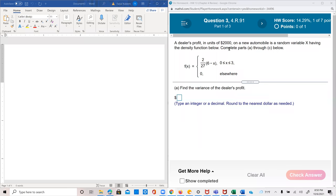A dealer's profit in units of $2000 on a new automobile is a random variable x having the density function given below. Find the variance of the dealer's profit.